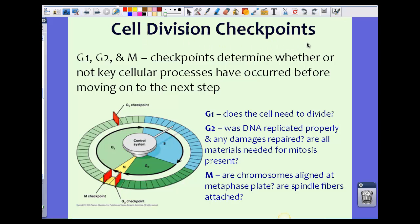Now during these cell division checkpoints, let's see exactly the questions that these checkpoints answer. There's checkpoints at the end of the G1 phase, the G2 phase, and the M phase. These checkpoints determine whether or not the key cellular processes have occurred before moving on to the next step.